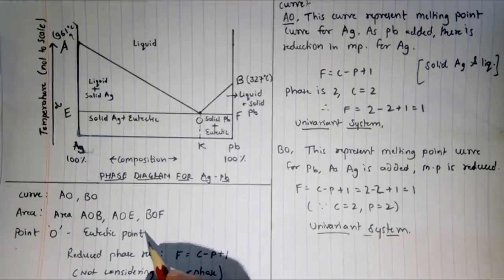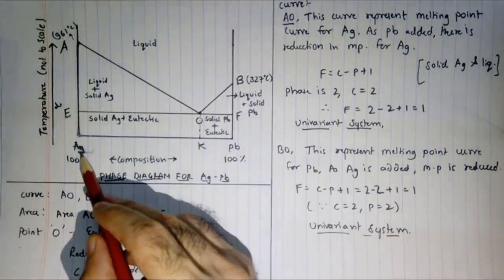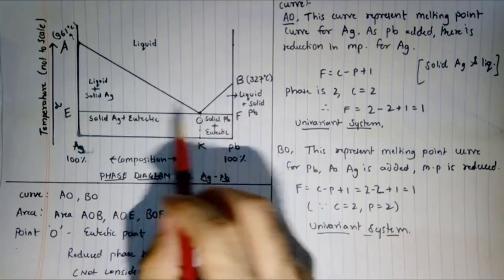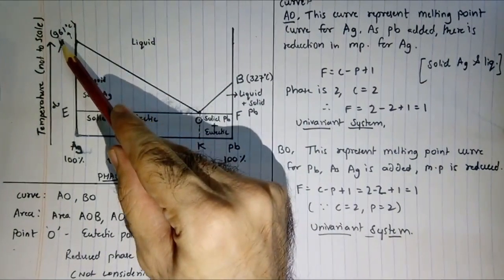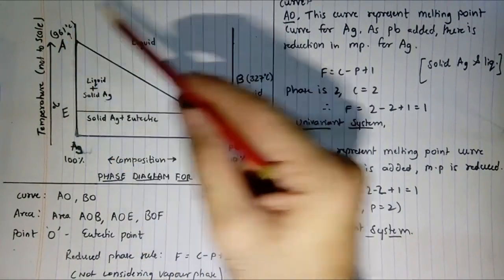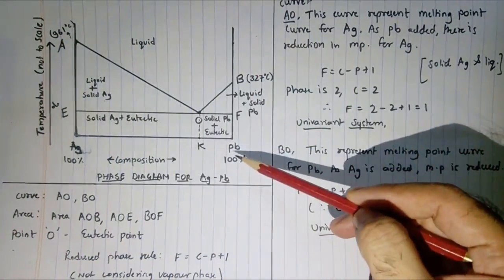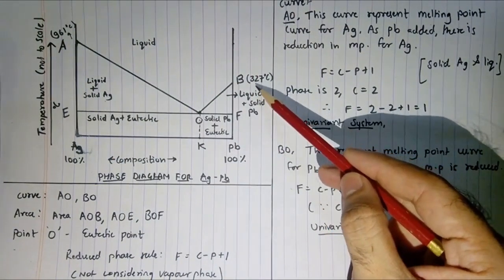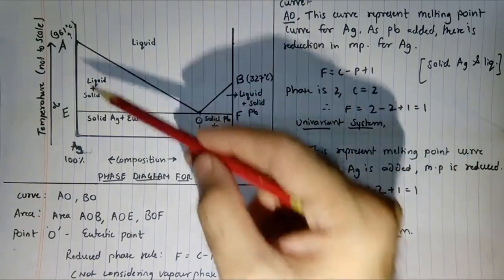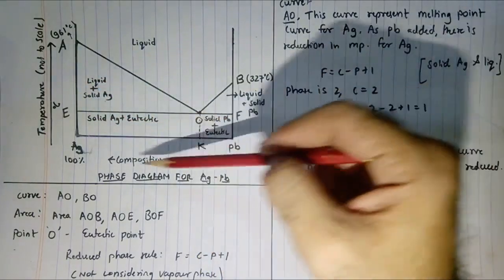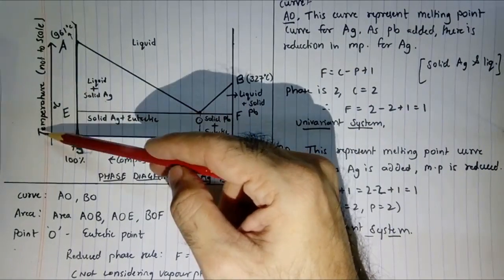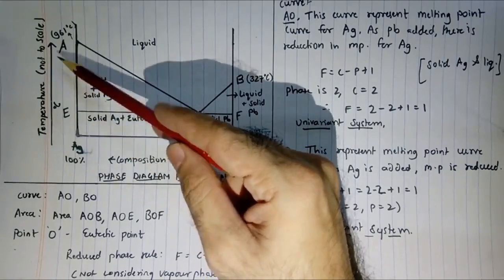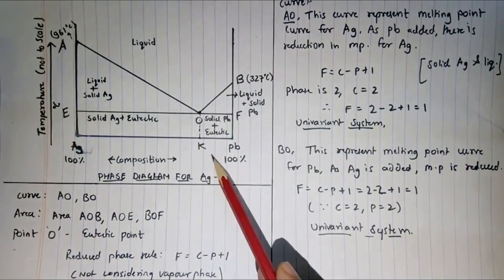Welcome. Let us discuss the two-component system phase diagram. I have taken the example of the silver and lead system. Silver in its pure form has a melting point of 961°C, and lead in pure form has a melting point of 327°C. This diagram is two-dimensional: one axis is temperature (not to scale) and the other is composition.